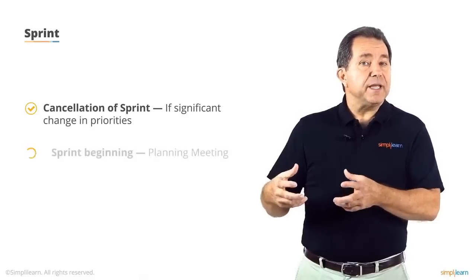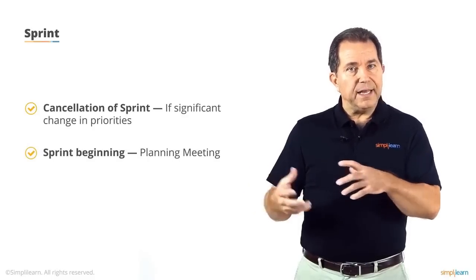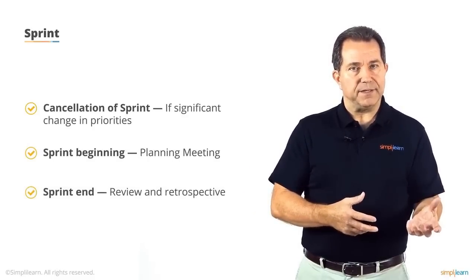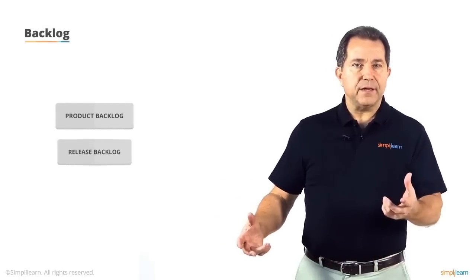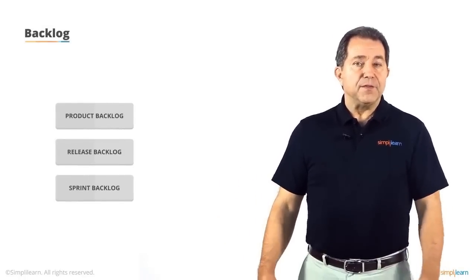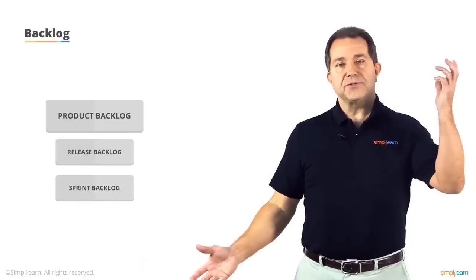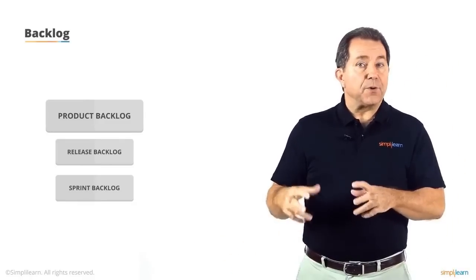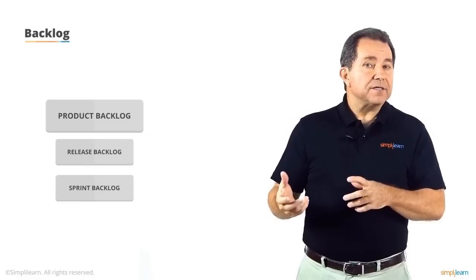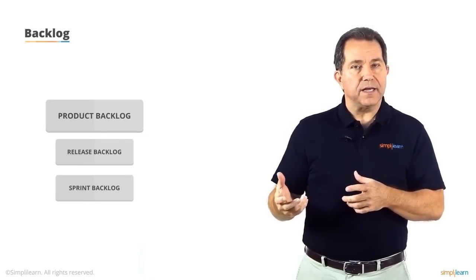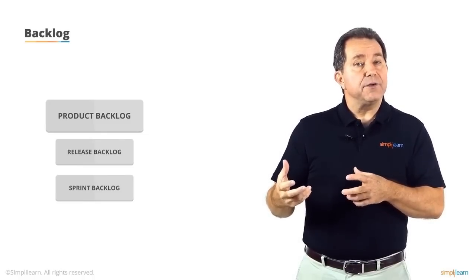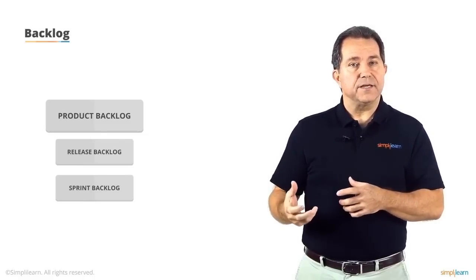A sprint will begin with a sprint planning meeting and end with a sprint review and retrospective. There are three backlogs used in Scrum: the product backlog, the release backlog, and the sprint backlog. The product backlog is the master container of all the user stories for the project, and is continually pruned and prioritized so that maximum value is delivered to the customer.